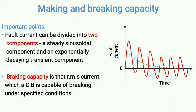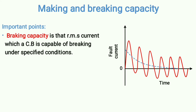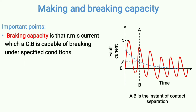Breaking capacity is the RMS current which a circuit breaker is capable of breaking under specified conditions. Whenever a fault happens, the circuit breaker has to disconnect the path. Breaking capacity shows the RMS value of the fault current which the circuit breaker is capable of breaking under specified conditions — at a particular recovery voltage or a particular striking voltage.